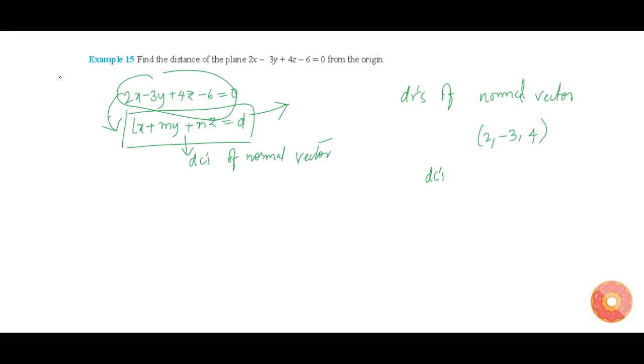Let us find the direction cosines. The DC's are nothing but 2 by under root of 2 square plus minus 3 square plus 4 square,